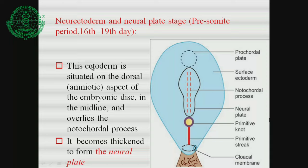In this first stage, the neuroectoderm is situated on the dorsal aspect of the embryonic disc, in the midline overlying the notochord process. The neural plate becomes thickened and forms the neuroectodermal plate. The notochord process has an inductive effect on the development of the neural tube.